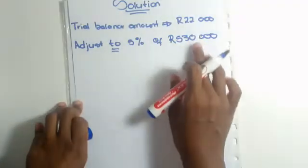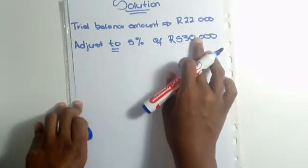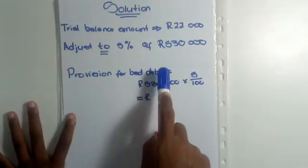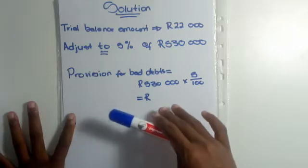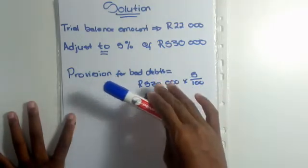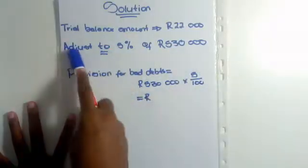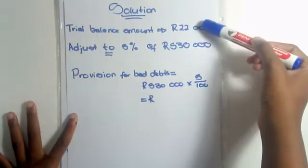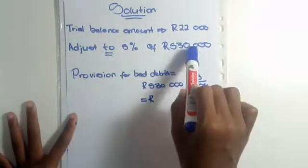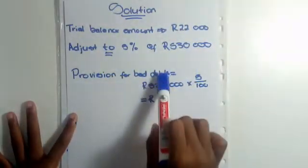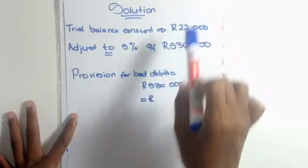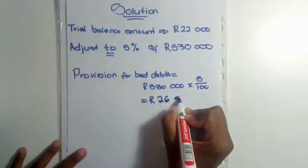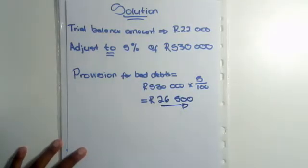The first thing to do is calculate what 5% of R530,000 is. We are calculating the provision for bad debts — the one that goes into the Statement of Financial Position — to find out what the correct amount should be. They said it must be adjusted to 5% of R530,000. So: 530,000 × 5/100 = R26,500. This is what our provision for bad debts was supposed to be.